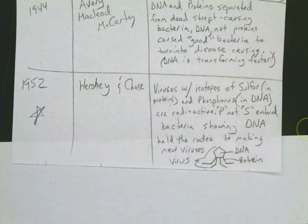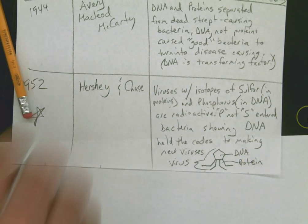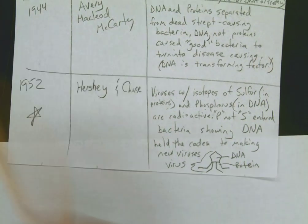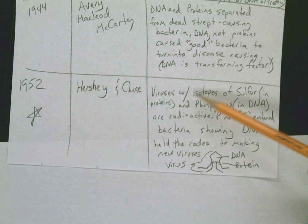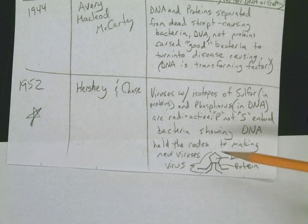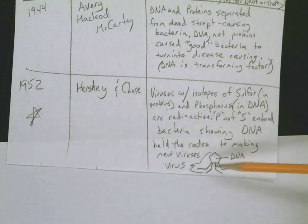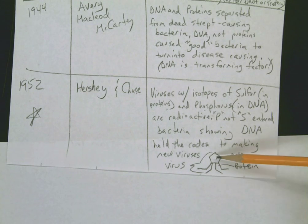Pause and copy notes. 1952, Hershey and Chase. Viruses with isotopes of sulfur in the proteins and phosphorus in the DNA are radioactive. The phosphorus, but not the sulfur, entered the bacteria, showing DNA held the codes to make new viruses. Here's a quick sketch of a virus — very simple, just DNA on the inside surrounded by a protein coat.